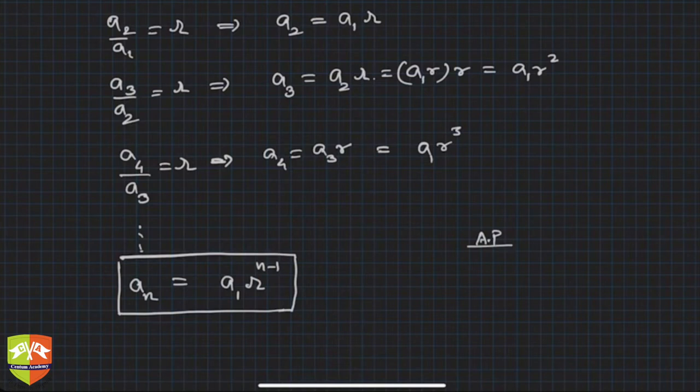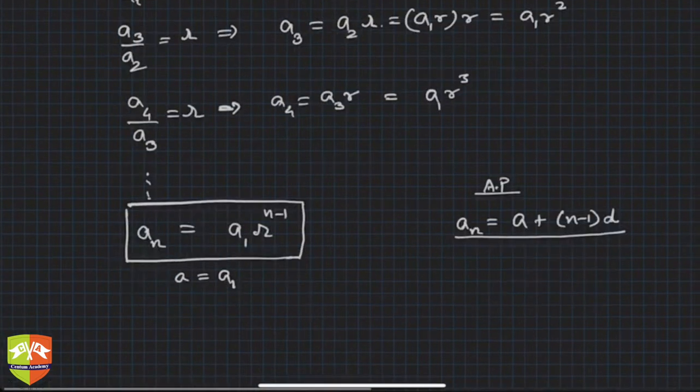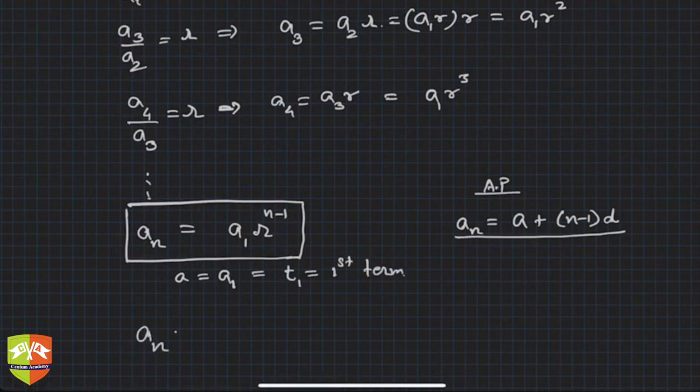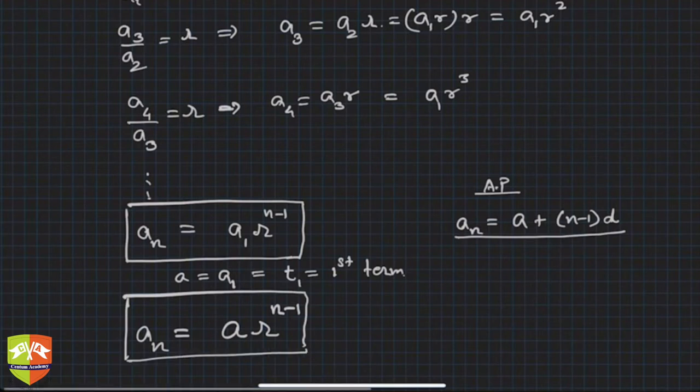This is the first formula. The corresponding formula in AP was nth term an or tn was a plus n minus 1 times d. Here you can say a1, let's say a is equal to a1 first term, then any nth term of the GP will be of the form ar^(n-1). This was the corresponding formula for nth term of a GP. This was formula for nth term of an AP.